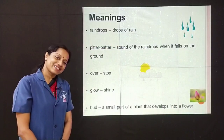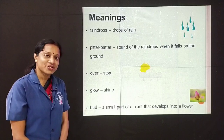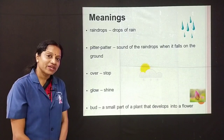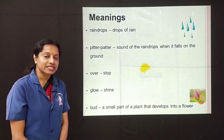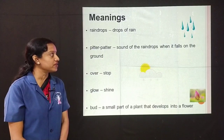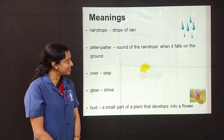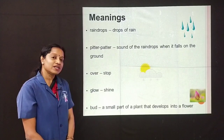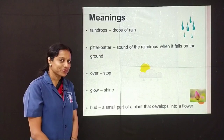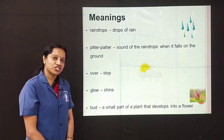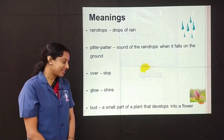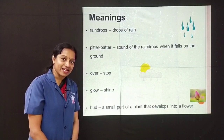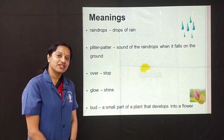Let's review all the meanings. Raindrops means drops of rain. Pitter patter is the sound of the raindrops when it falls on the ground. Over means stop. Glow means shine. And bud is a small part of a plant that develops into a flower.